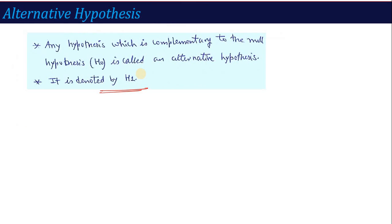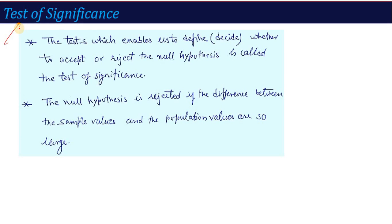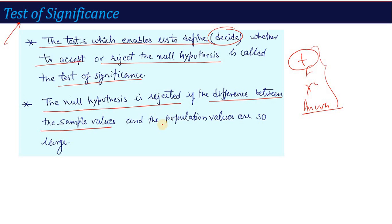Now about hypothesis testing, you have to know about test of significance. What are the different tests that help us test the hypothesis? The test which enables us to decide whether to accept or reject the null hypothesis is called test of significance. The different tests you'll study are t-test, F-test, chi-square test, ANOVA (analysis of variance). These tests tell you whether to accept or reject your null hypothesis. Here you calculate sample characteristics with the help of these tests. If there's too much difference in sample characteristics, we reject the null hypothesis, if the difference between the sample value and the population value are so large.